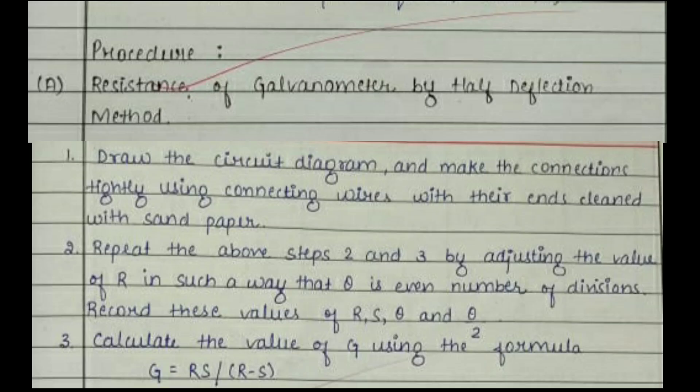This image shows the procedure that has to be followed for the performing of the practical. There are three procedures: the A part is for the resistance of galvanometer by half deflection method and below that the steps that you have to follow are given. So the upcoming images may be two or three, and they will be of the procedure only, so watch the upcoming images also carefully.